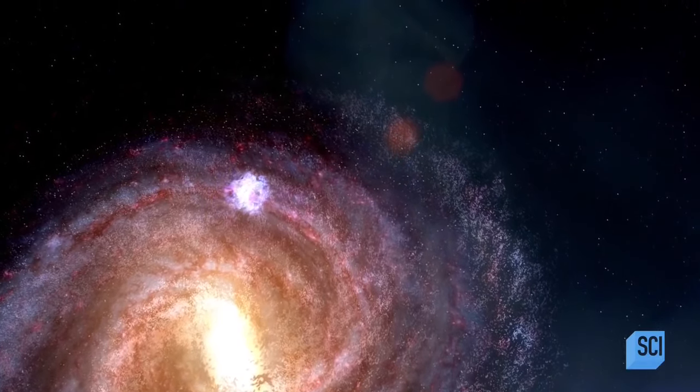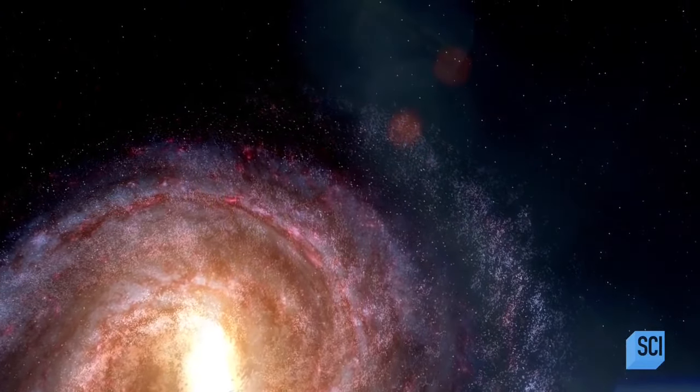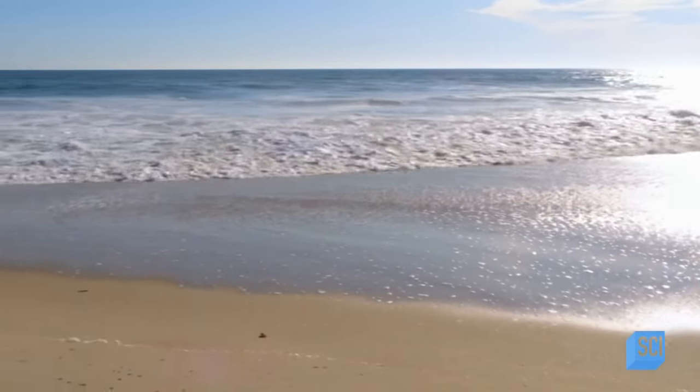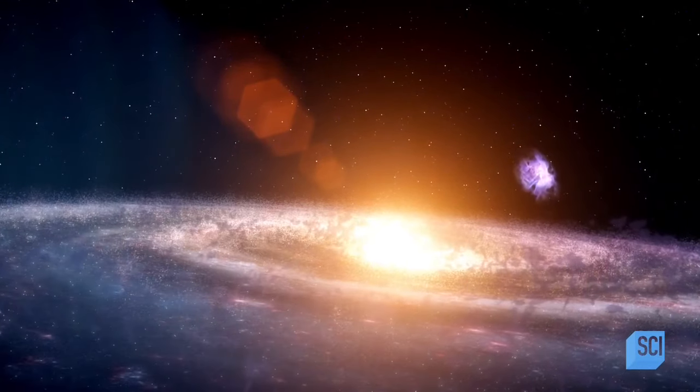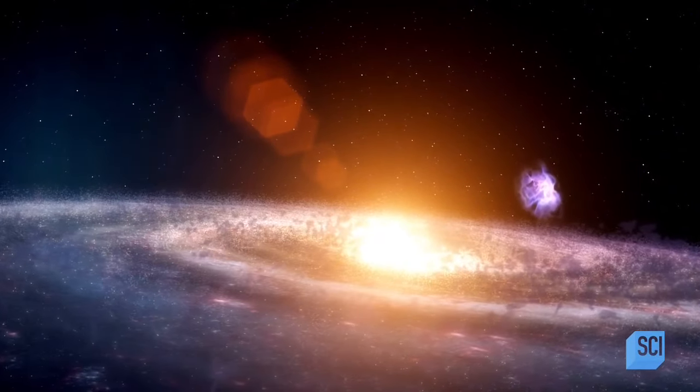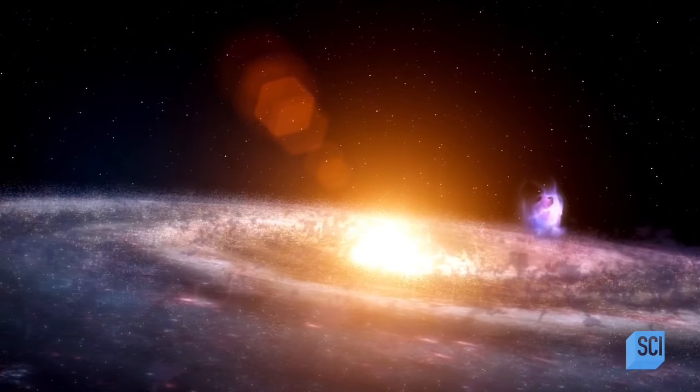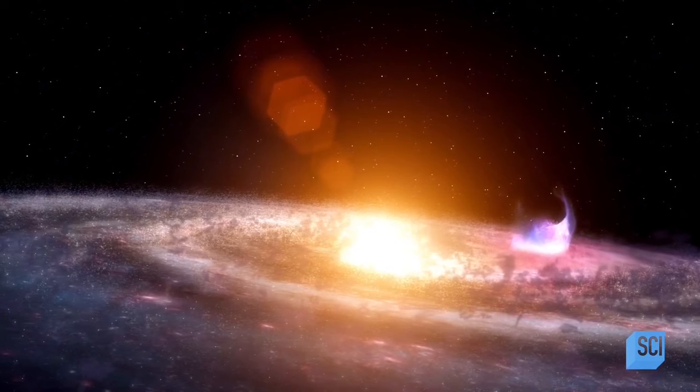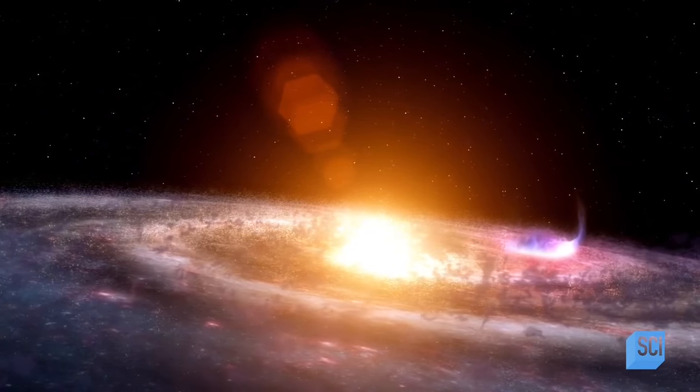But appearances can be deceptive. When galaxies collide, the first thing you might imagine is that the stars collide, but actually that doesn't happen. Galaxies are mostly empty space. If you took the sun, which is a million miles across, and shrunk it down to the size of a piece of pollen, the galaxy itself would be twice the size of the Pacific Ocean, and the nearest star to the sun would be a mile away. Those tiny pieces of pollen are never going to hit each other. The distances involved are staggering. And at the moment of impact, most of the stars from the two galaxies miss each other entirely.